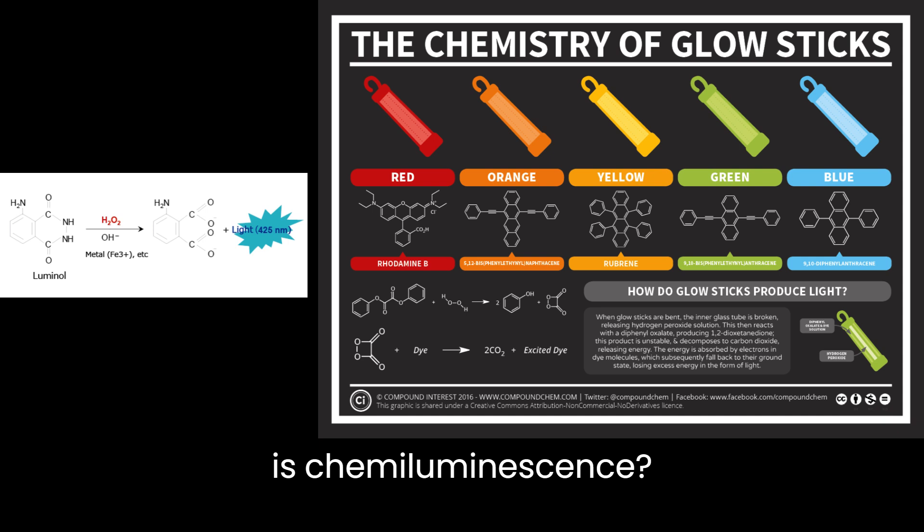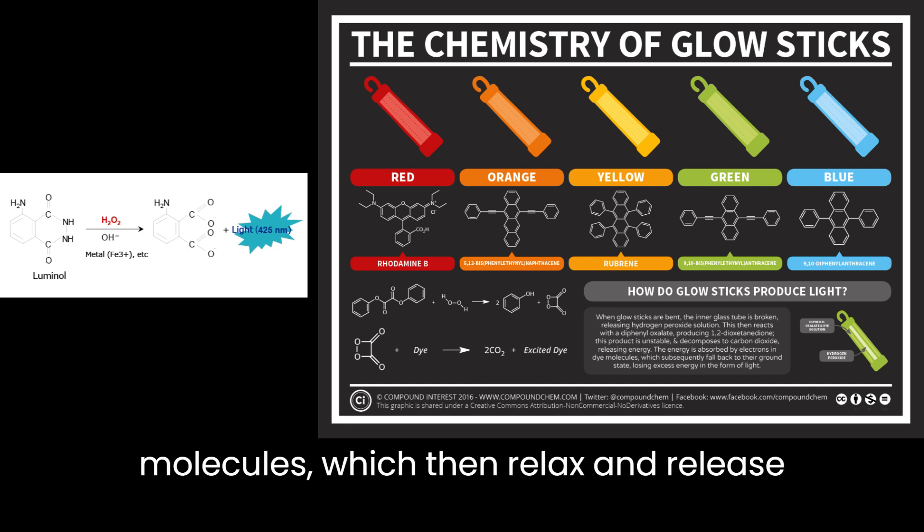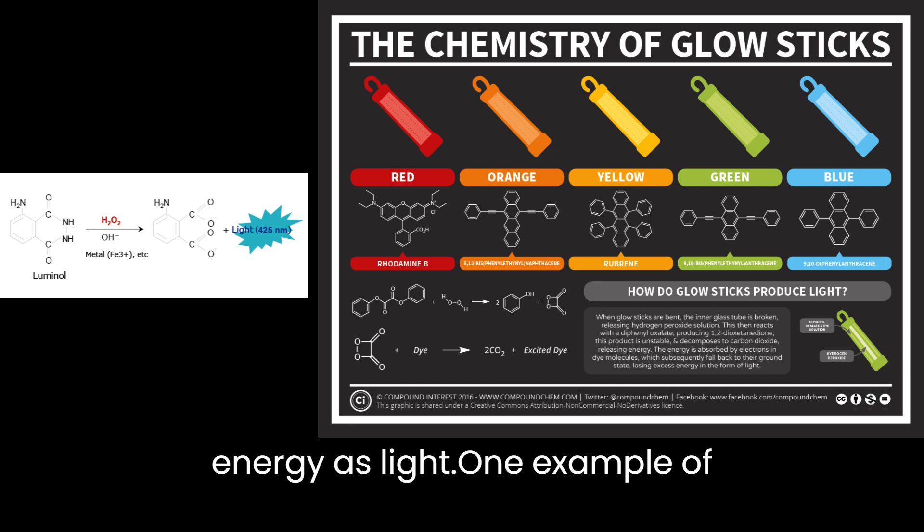What is chemiluminescence? Chemiluminescence is a process where light is emitted as a result of a chemical reaction. In this process, chemical energy is converted directly into light energy. This happens when a chemical reaction releases energy in the form of excited molecules, which then relax and release energy as light.